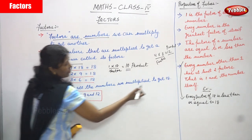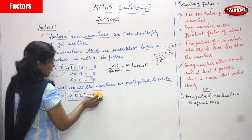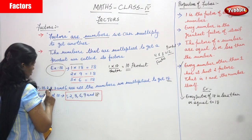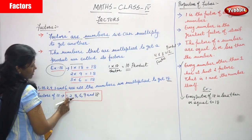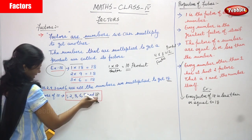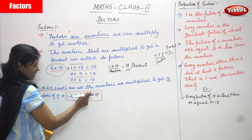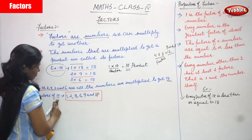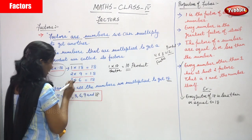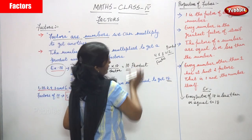All the numbers we multiply to get 18 — 18 is the product. So the factors of 18 are 1, 2, 3, 6, 9, and 18. In proper order: 1, 2, 3, 6, 9, and 18. These are the factors of 18. Note that 1 is a common factor for all numbers, and 18 itself is also a factor — the same number is also considered one of its own factors.